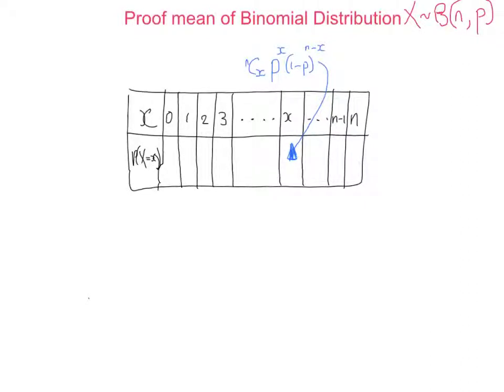If X is a binomial distribution with n trials and probability of success p, then because it's a discrete random variable, we could make a table of all the possible outcomes — all the possible successes: no success, one success, two successes, all the way up to n successes — and fill in their individual probabilities. Each probability would be of the form n-choose-x, p to the x, times (1 minus p) to the n minus x.